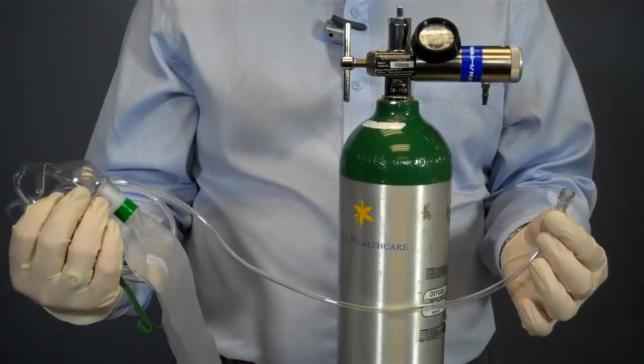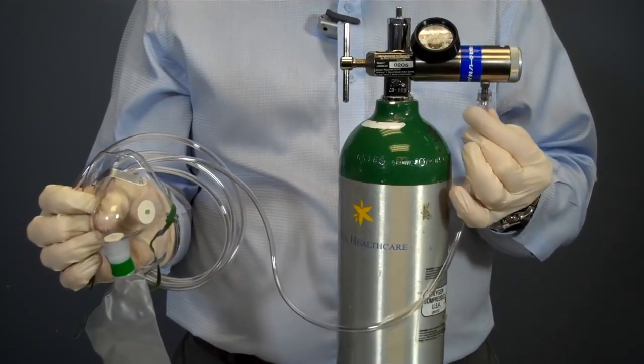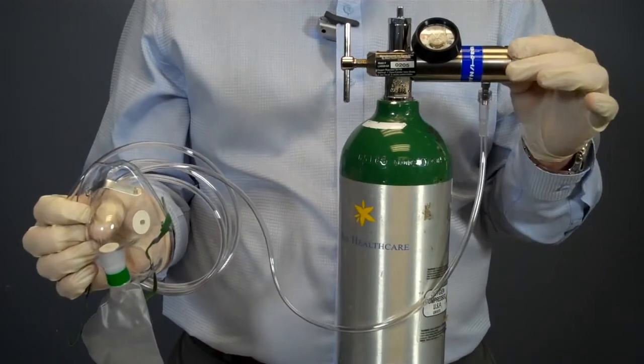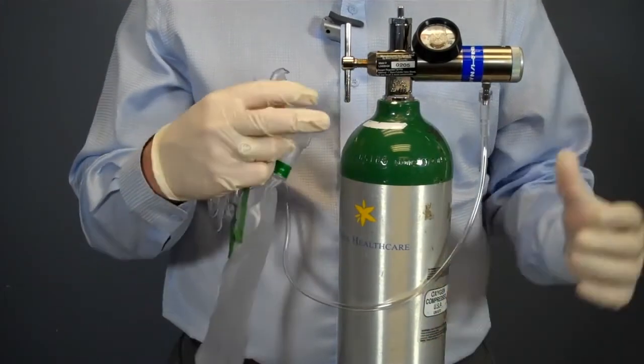Now I need to attach a non-rebreather mask to the tank and prepare it for patient use. After checking the packaging and mask for tears, punctures, or missing pieces, I pull out the tubing and attach it to the port valve on the regulator.